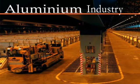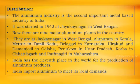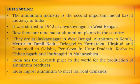Aluminium industry. Aluminium industry is the second important metal-based industry in India. It was started in 1942 at Jaykayanagar in West Bengal. Now there are nine major aluminium plants in the country. They are at Jaykayanagar in West Bengal, Alupuram in Kerala, Mettur in Tamil Nadu, Belagavi in Karnataka, Hirakud at Damanjodi in Odisha, Renukoot in Uttar Pradesh, Korba in Chhattisgarh, and Ratnagiri in Maharashtra. India has the 11th place in the world for the production of aluminium products. India imports aluminium to meet its local demands.